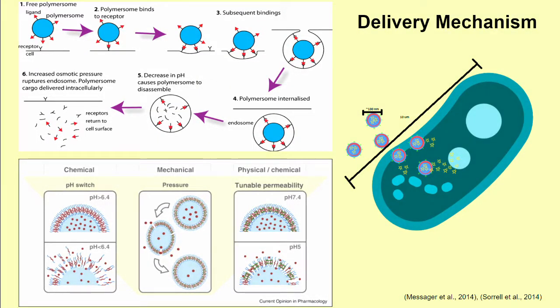Here is a schematic of the polymersome delivery mechanism, where it binds to a cell surface receptor, is absorbed by the cell, and releases its contents after receiving chemical or mechanical triggers from the cell environment.